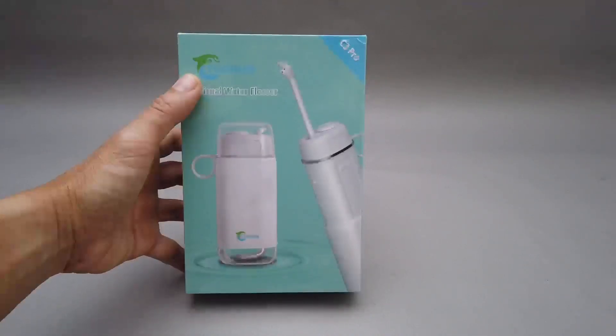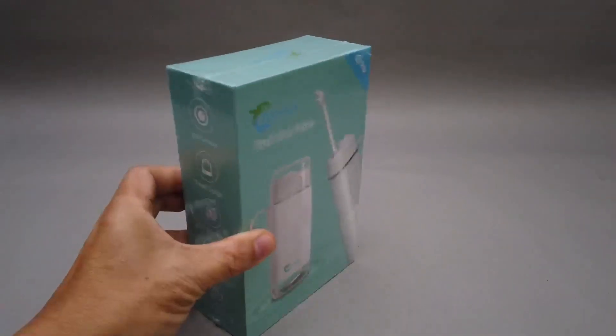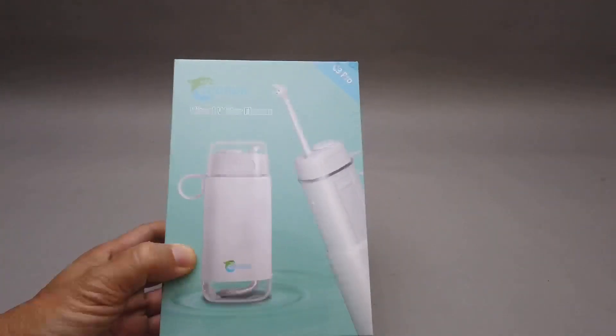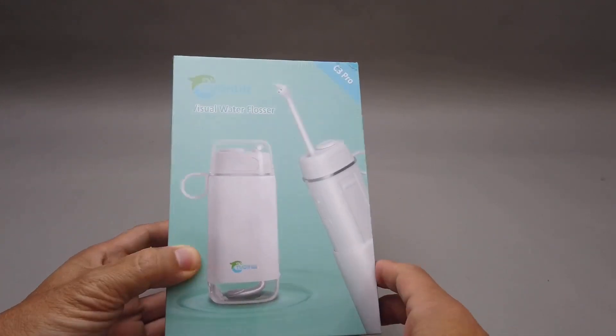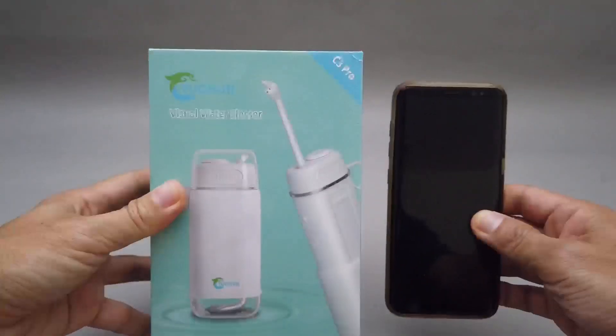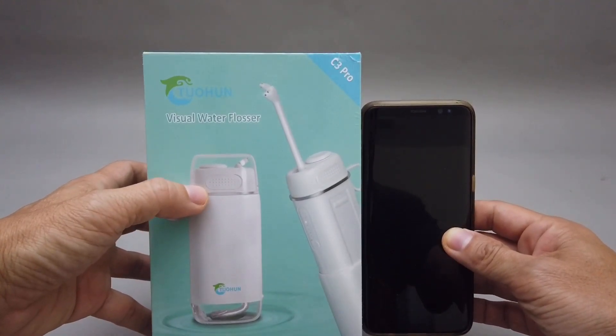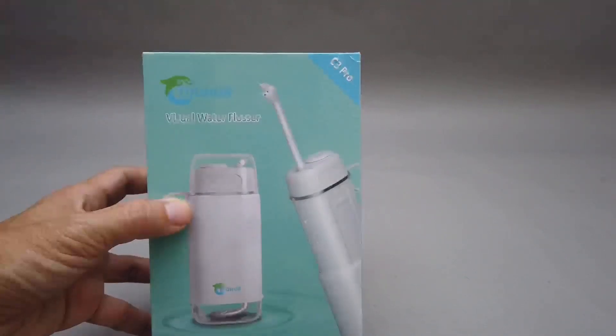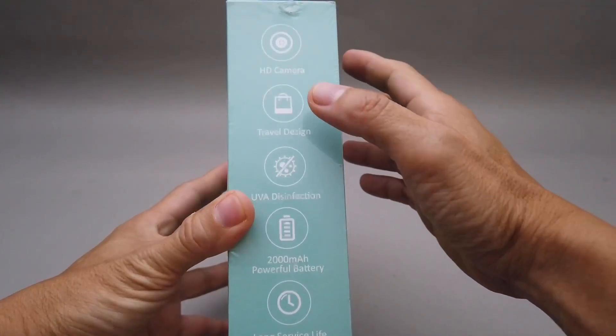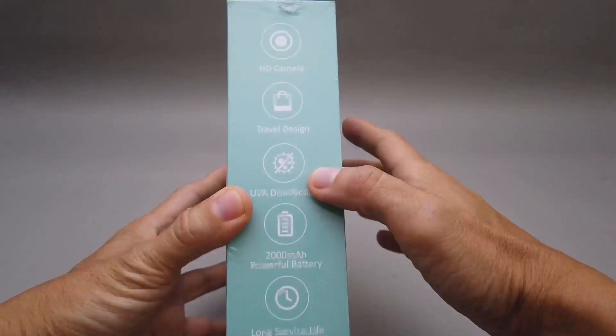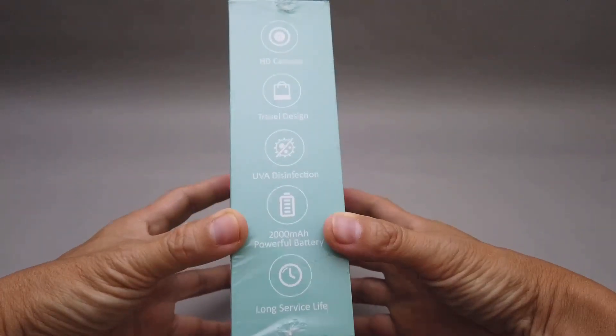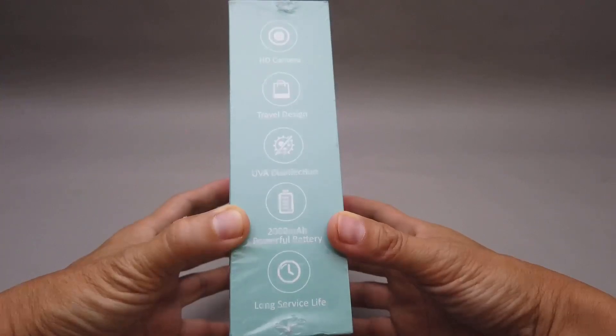The wave is very active. Anyways, so this is a water flosser, rechargeable and portable based on the size of this box. It's not very big and I think it can telescope and extract out to increase the volume. What's good about this is it has an HD camera, portable, and it has some UVA light that supposedly sterilizes the water. A 2000 milliamp hour battery, I figure it's lithium ion, and hopefully it has a long lasting battery life.